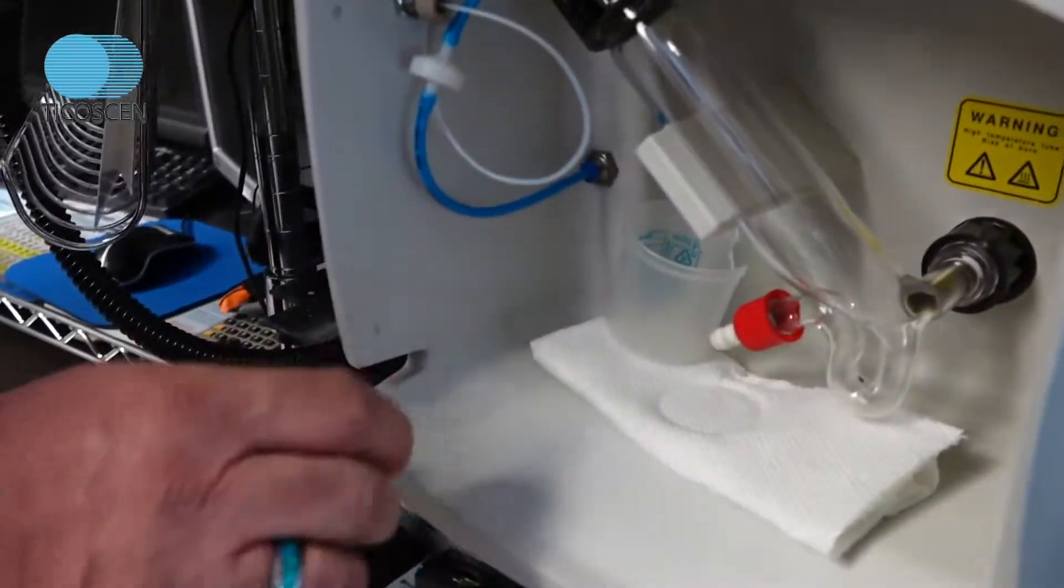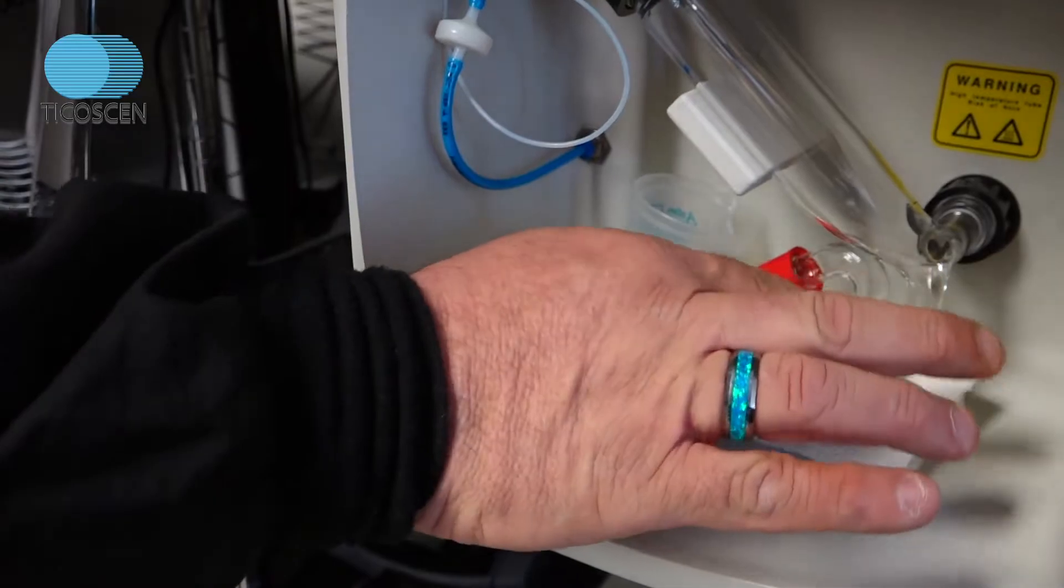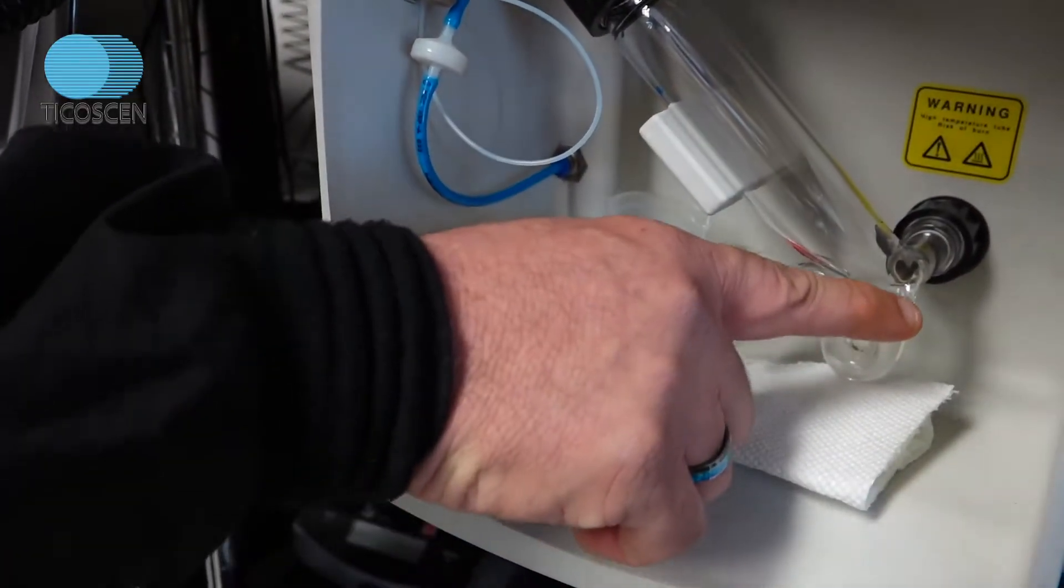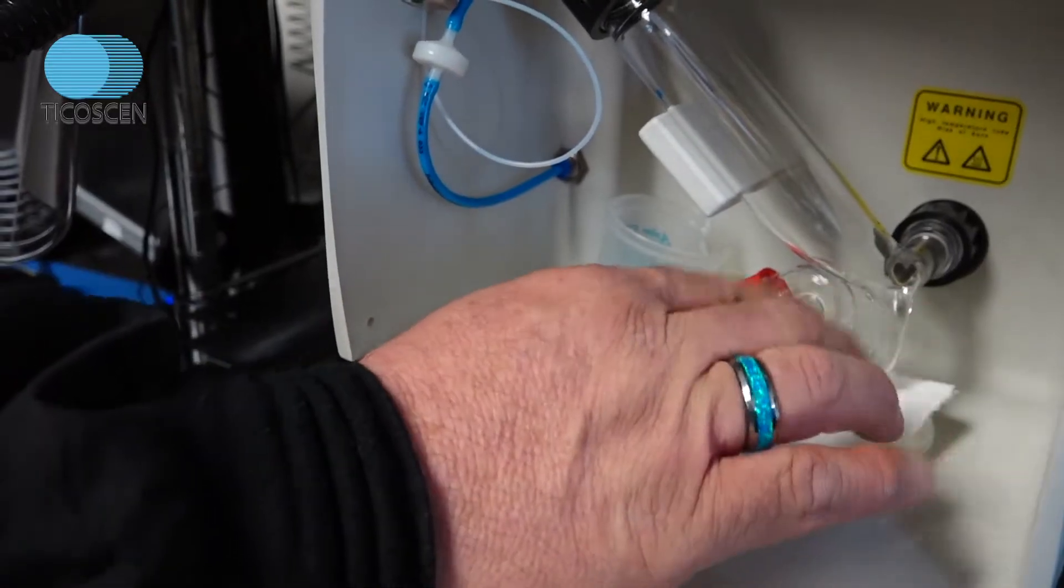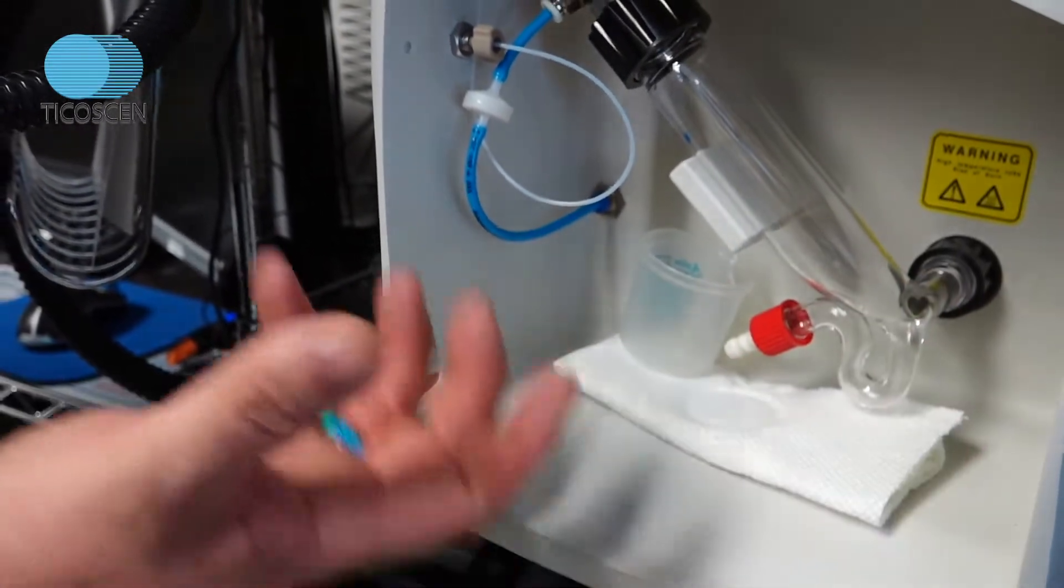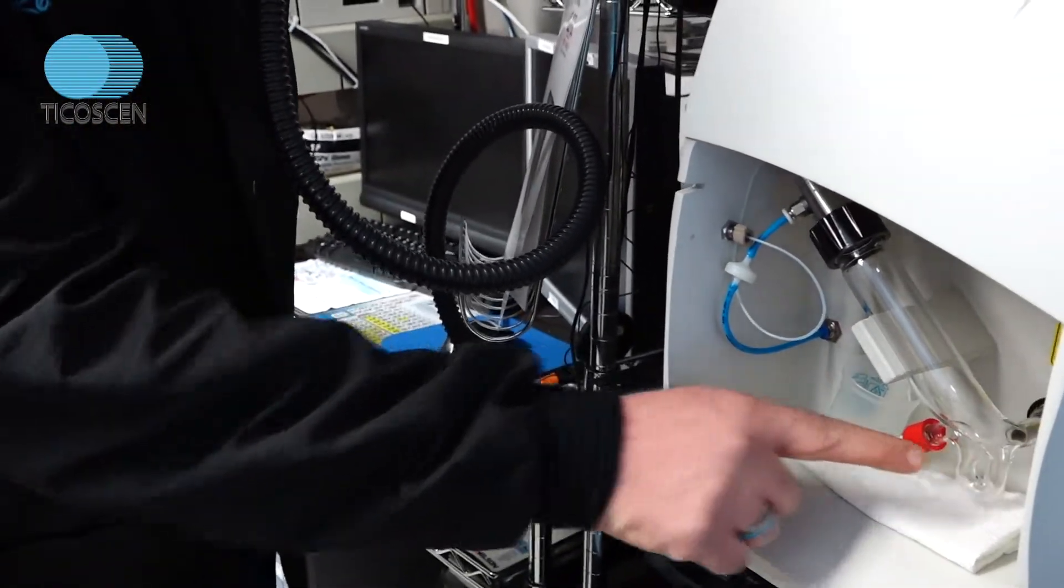You want to see a very stable liquid level in this U-trap. We call this the gooseneck. And you want to see equal meniscuses of liquid in this little U-shape. And if it's bubbling in or blowing out, you have a pressure differential issue. You want to have a stable liquid slug here.